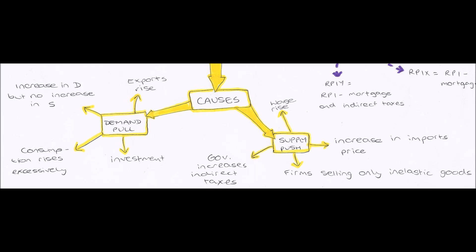Now onto our supply-push causes. I'd like to point out I made a small mistake here: where I said there is an increase in the price of imports — if there is an increase in the price of imports, we will import less because they are less attractive to buy as they are more expensive. So therefore imports will fall, the bracket part of the aggregate demand formula will increase, and therefore aggregate demand will rise causing inflation. So that really should be a demand-pull cause on the other side.